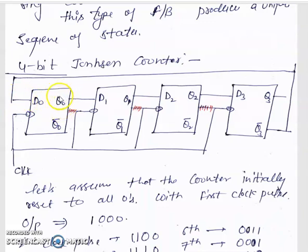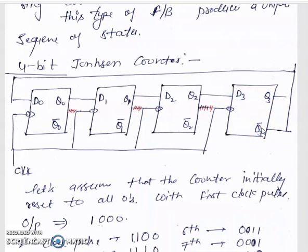The output of the first flip-flop is connected to the input of the next flip-flop. The normal output Q of each flip-flop is connected as the D input of the following flip-flop. However, for the Johnson counter, it is Q-bar — the inverted output of the last flip-flop Q3 — that is fed back to the input of the first flip-flop.